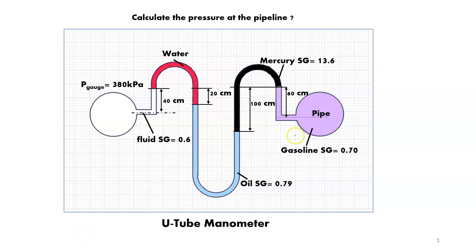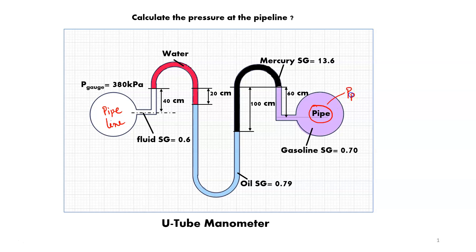We need to find the pressure at a pipeline. UTO is connected with two pipelines. One pipeline has a known gauge pressure of 380 kPa. Using a UTO manometer, we have to calculate what will be the pressure at the second pipeline. A cross-sectional view is shown and the manometer is connected.